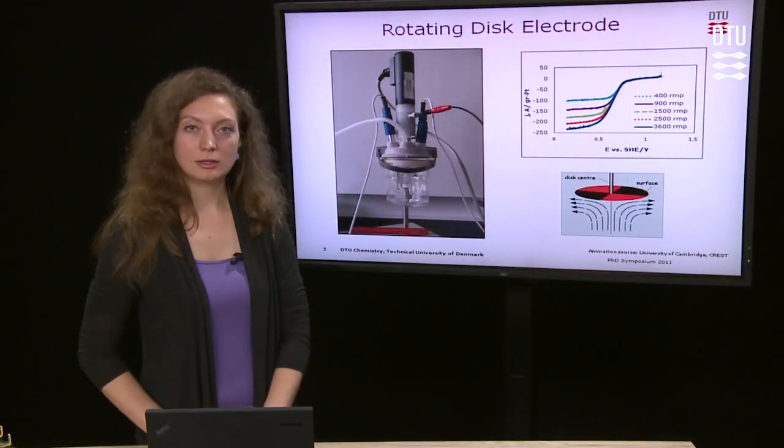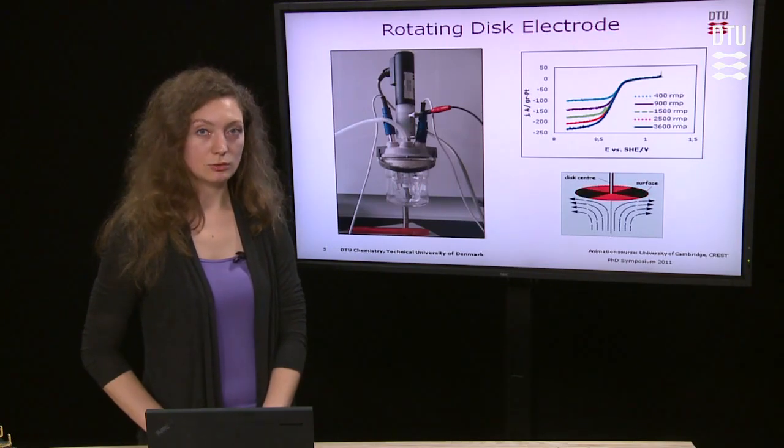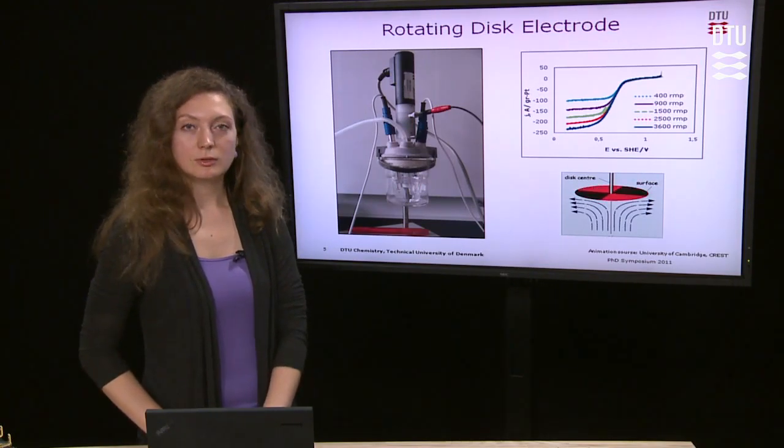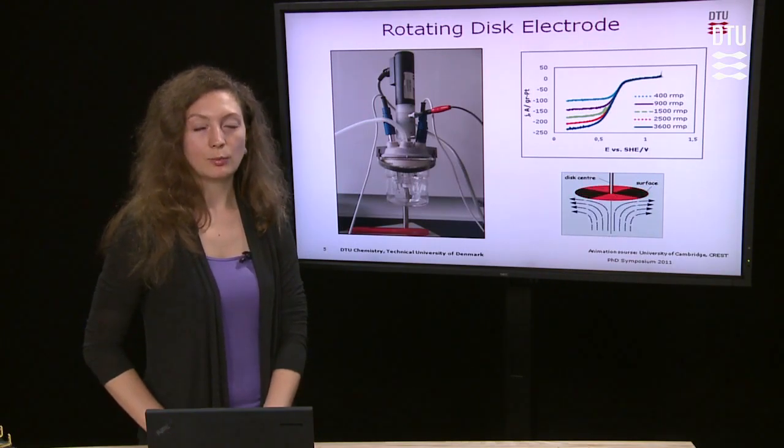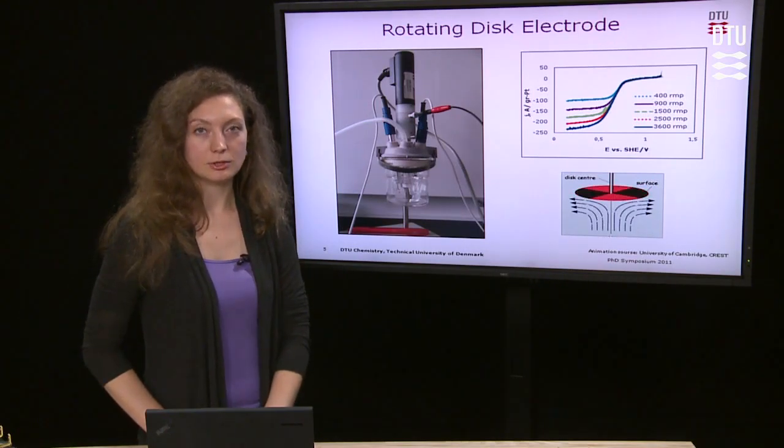The main electrochemical technique used is a rotating disc electrode, which allows quantitative determination of activity and stability of the catalyst under well-known mass transport conditions.